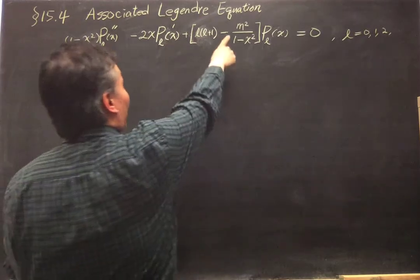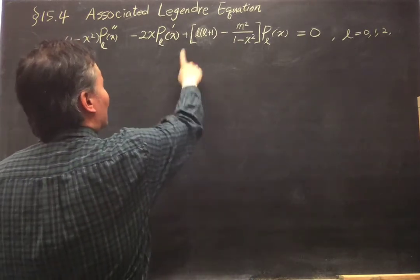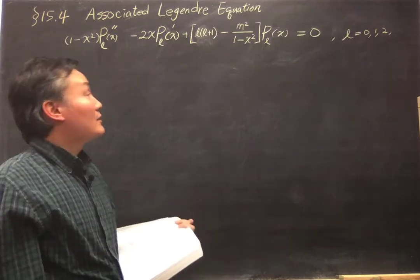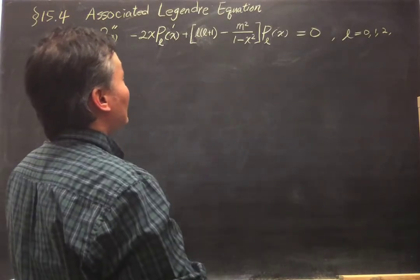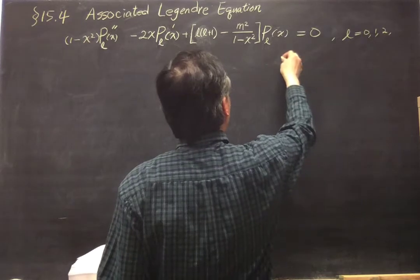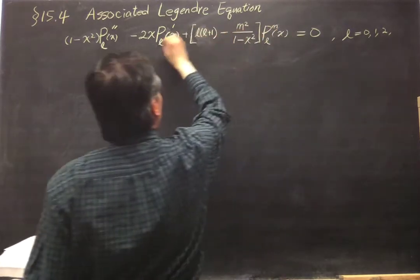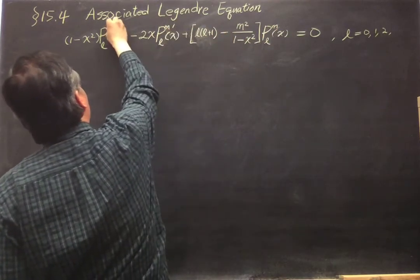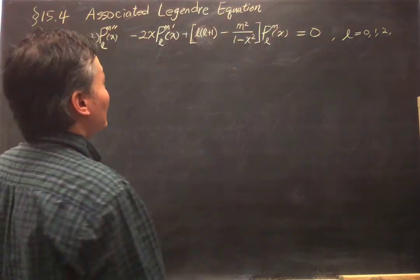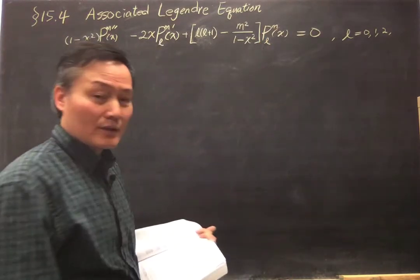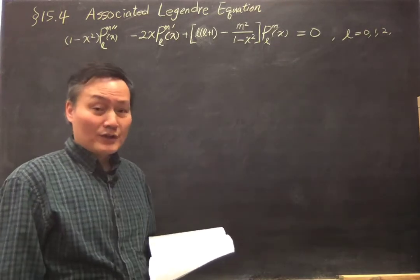If we go back to the equation with M not zero, we can use the same form and same Lambda equals L times L plus 1, but now it depends also on M. So the solution will have subscript L but we add the superscript M. This superscript M is a notation, not a power or exponent. These P_L^M, for the case of integer M — which we will later restrict to integer M — are called Associated Legendre Functions.